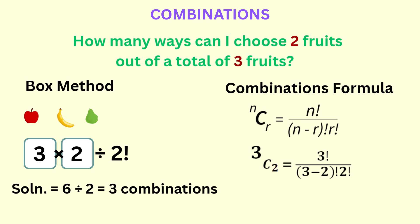So after making the substitutions n equals 3 and r equals 2, we get 3 factorial, which is 6, over 1 times 2 factorial, which is 2. So our solution is 6 over 2, which is equal to 3 — the same number of combinations we found in the previous methods.